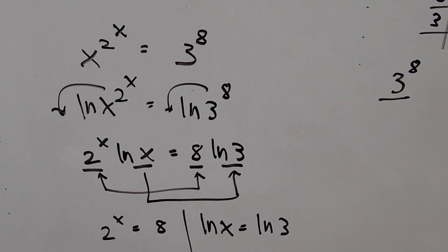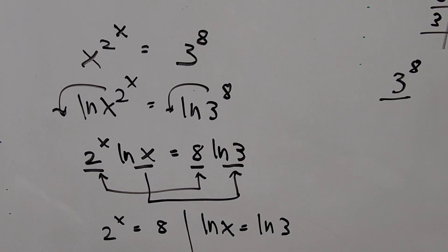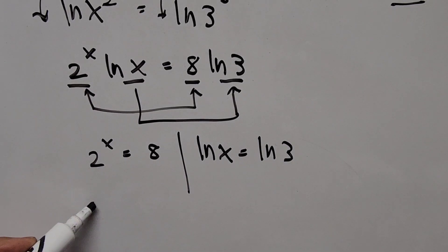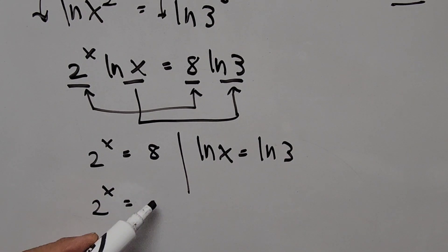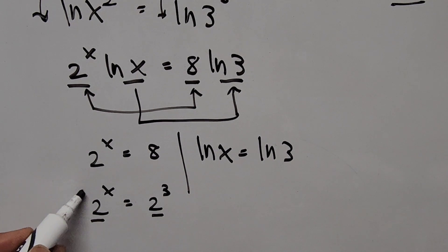And from here, on the left hand side, 2 to the power of x is equal to 8, which is 2 to the power of 3. The base are the same, this means the exponent must be the same. So we can equate the exponent, and now x is equal to 3. That's our answer.